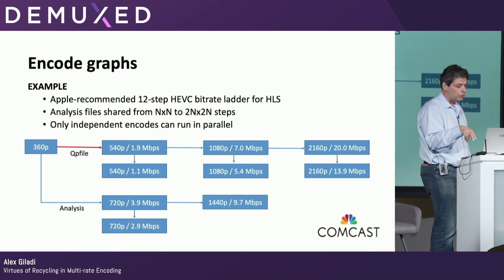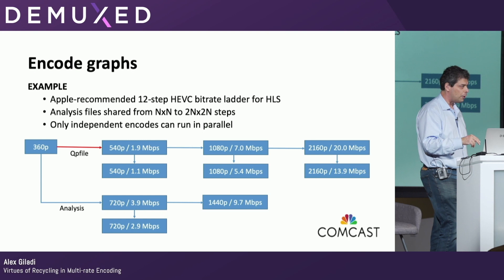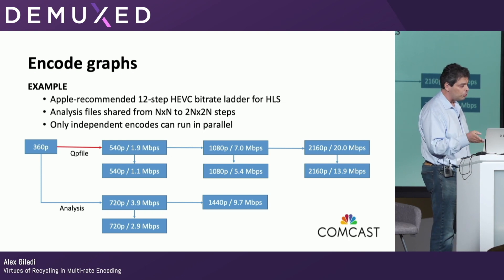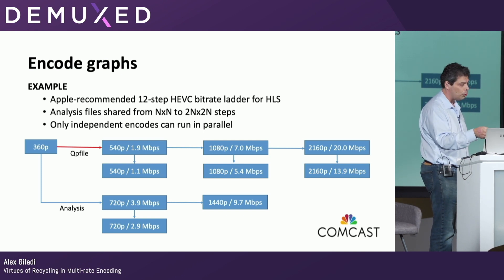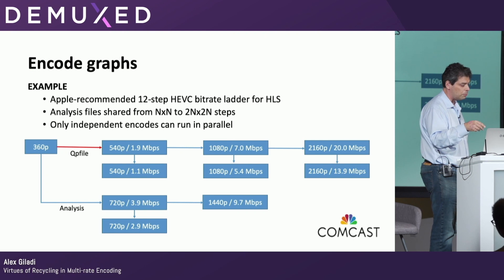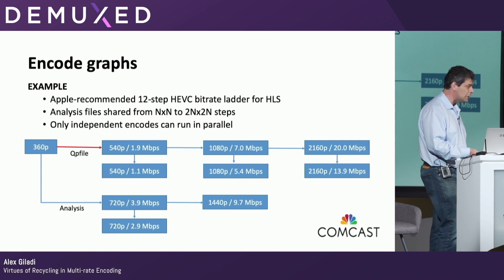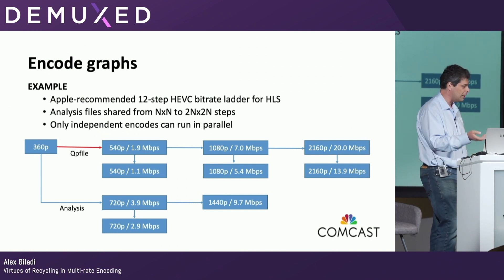We do exactly the same thing: 1080p at 7 megabits to 1080p at 5.4, and 1080p at 7 megabits to 2160p at 20 megabits. The only problem with this approach is that before you could parallelize much more — now, for instance, you need to wait until the first 540p encode is done before doing 1080p. You can parallelize things, but only things that don't have dependencies on each other. On the other hand, this reduces compute time to a significant degree.